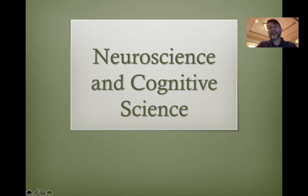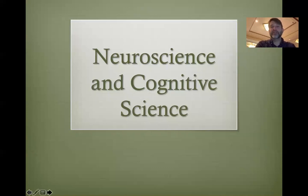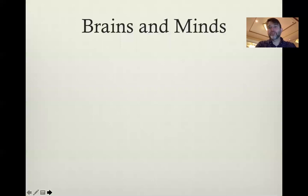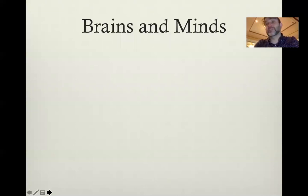Today we're going to be looking at moral cognition and cognitive science, and I also want to think about neuroscience and how it relates to cognitive science in this lecture. First of all, I want to talk about the relationship between brains and minds. We've touched on this before — we've talked about dualism and views that oppose dualism, and how those other views suggest there's an important connection between brains and minds. But what is this connection?